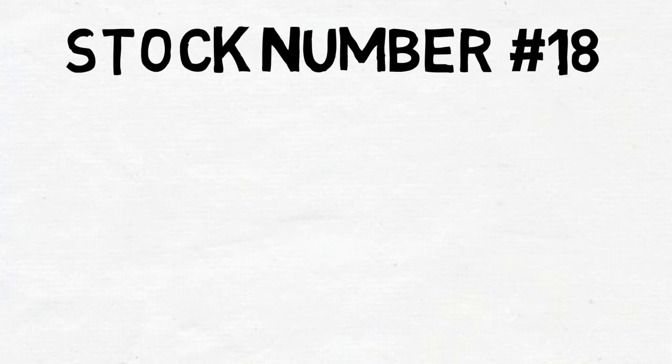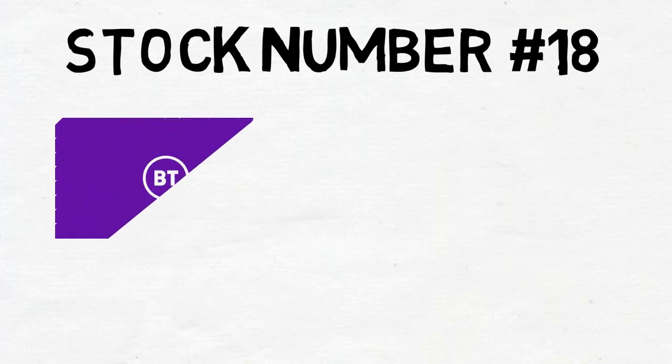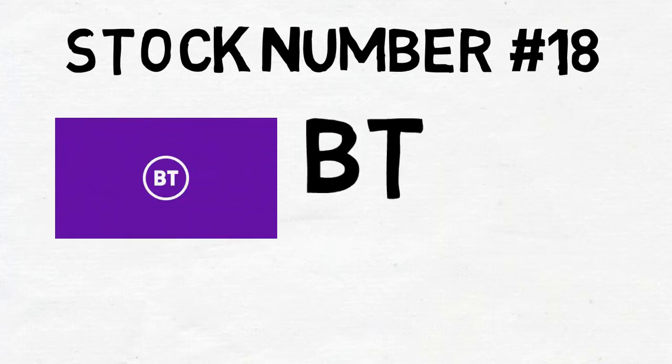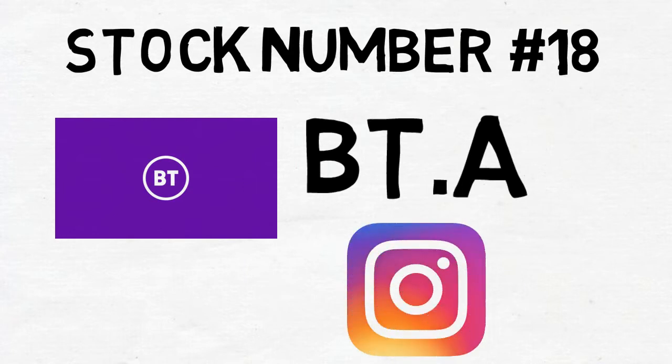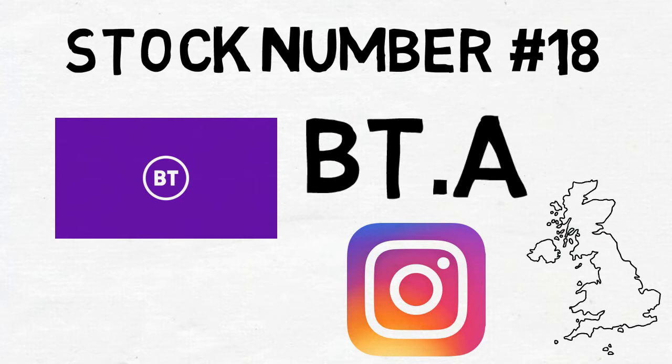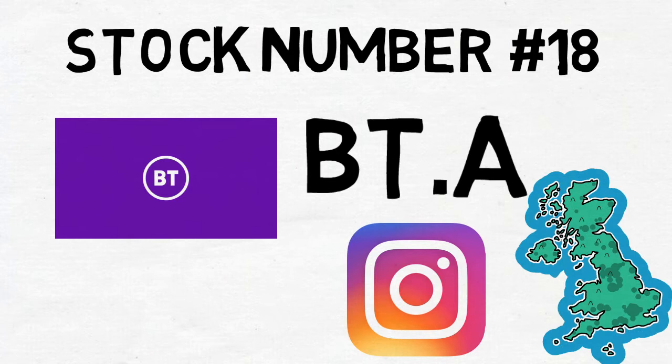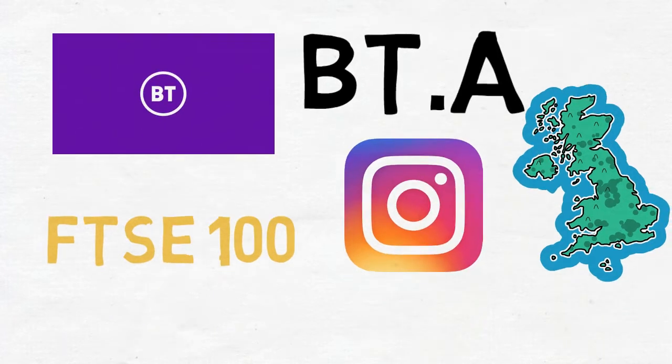The 18th stock I bought for the Dividend Experiment is BT Group PLC, ticker symbol BT.A. If you follow me on Facebook or Instagram then you'd already know as I post it on there. And as I said last stock of the month, this one's from the UK and is actually part of the FTSE 100. This is good as it means we don't need to pay the US withholding tax like many of the others in the portfolio.